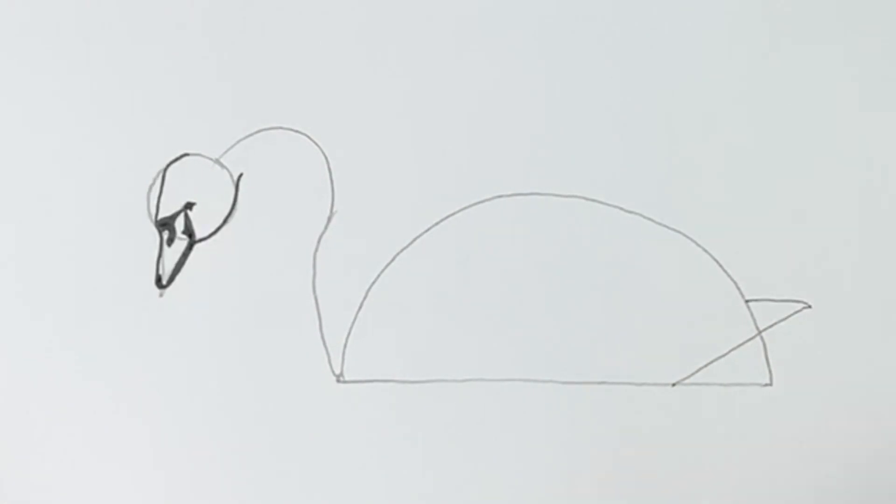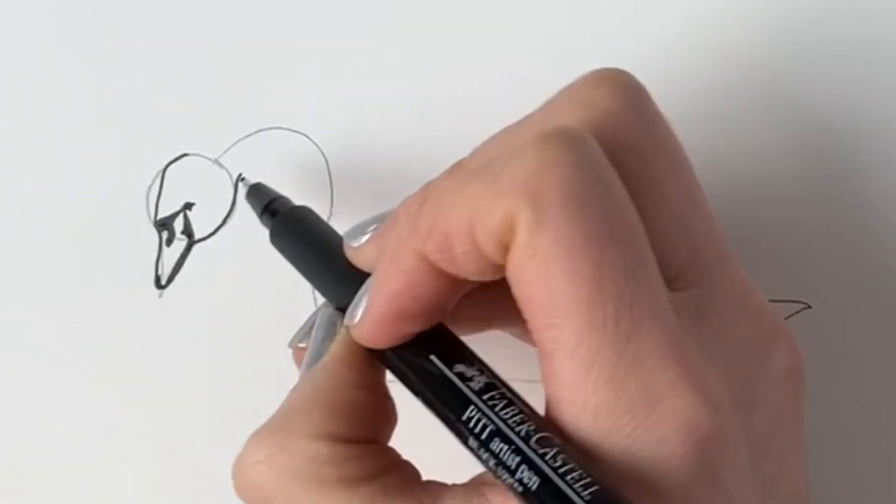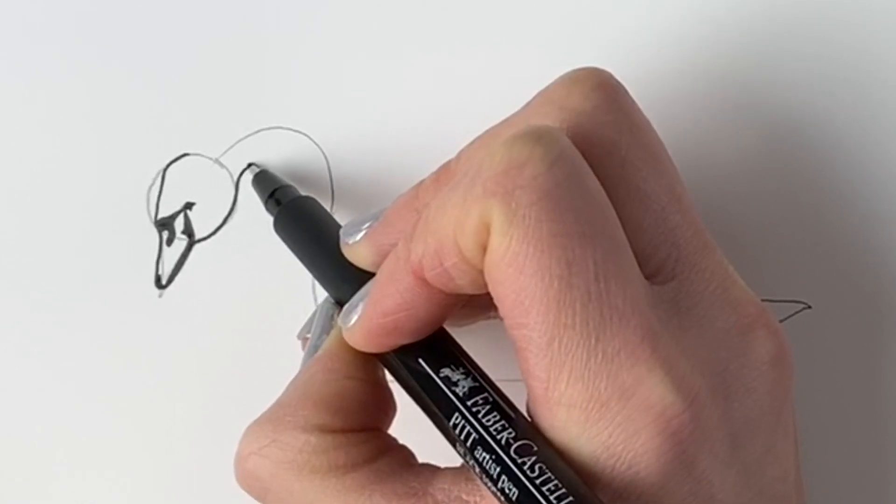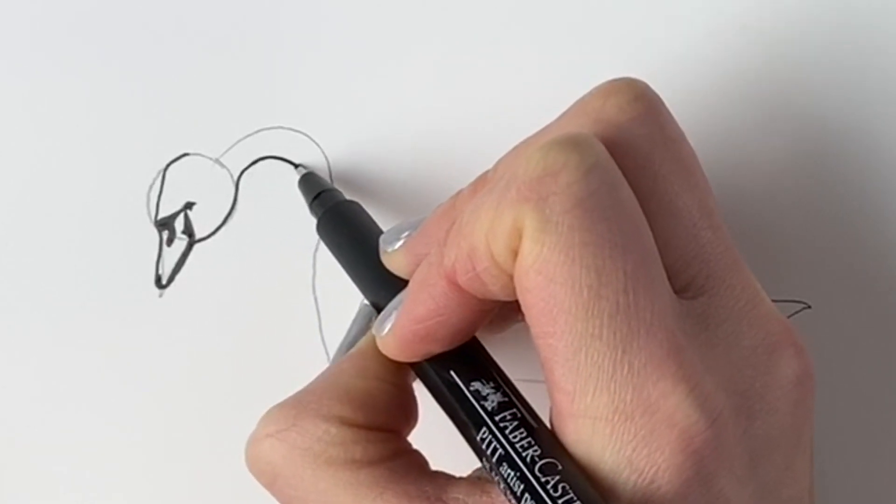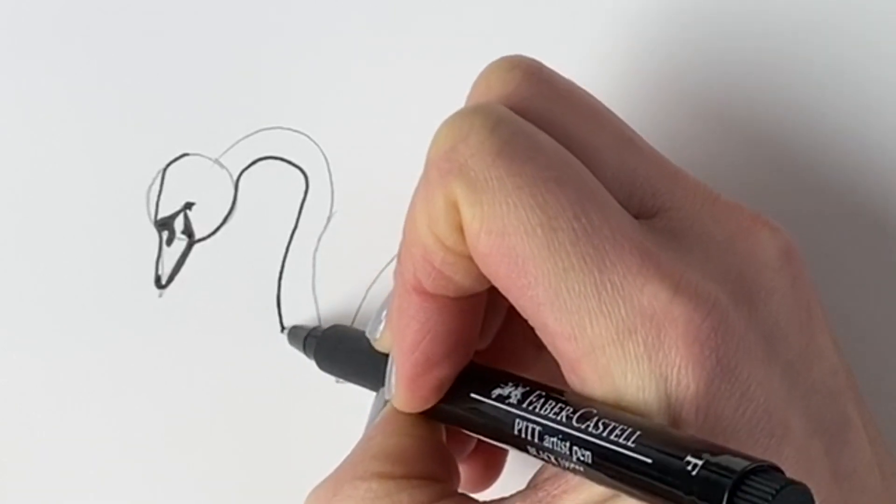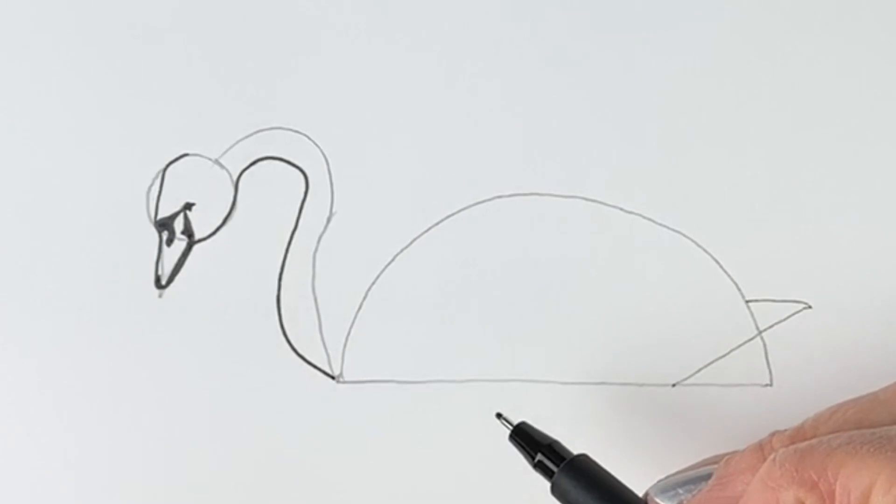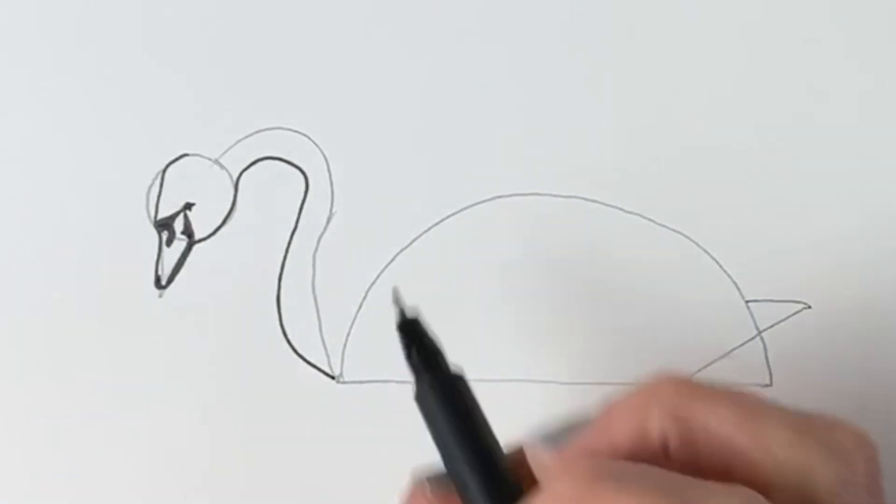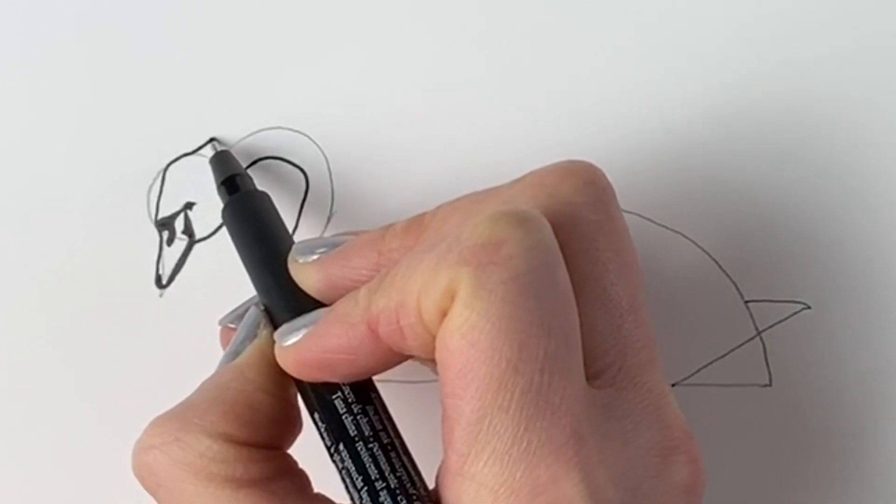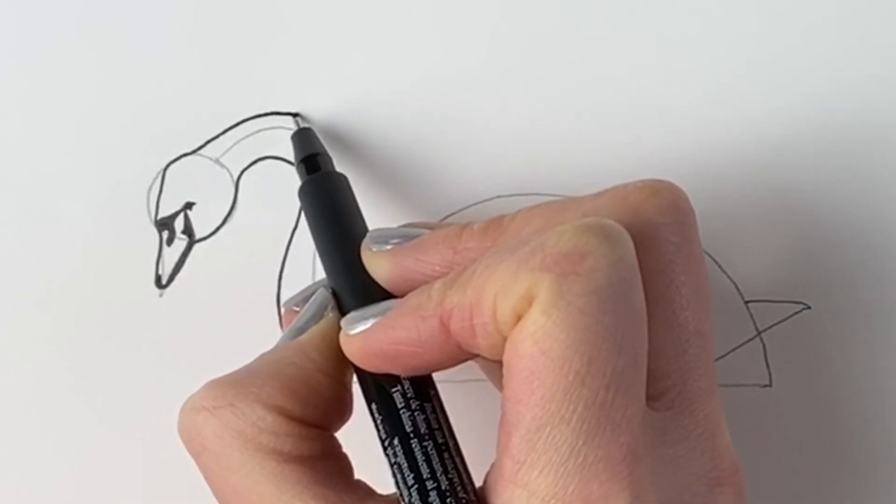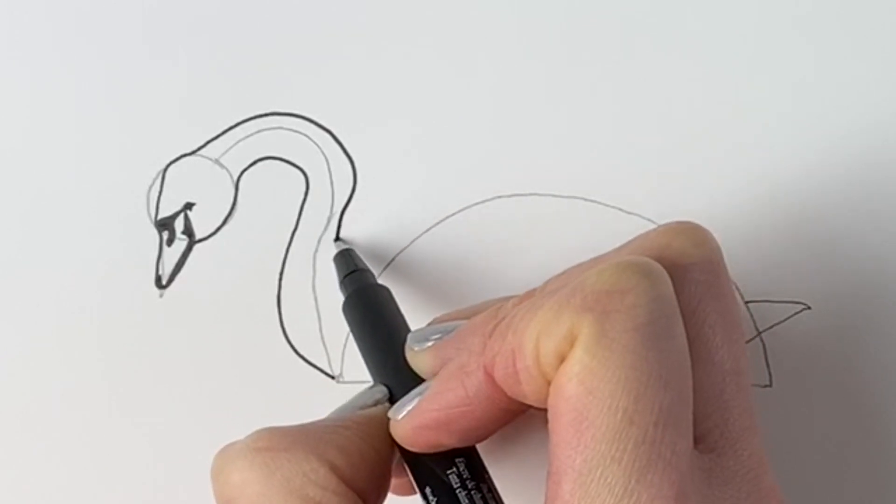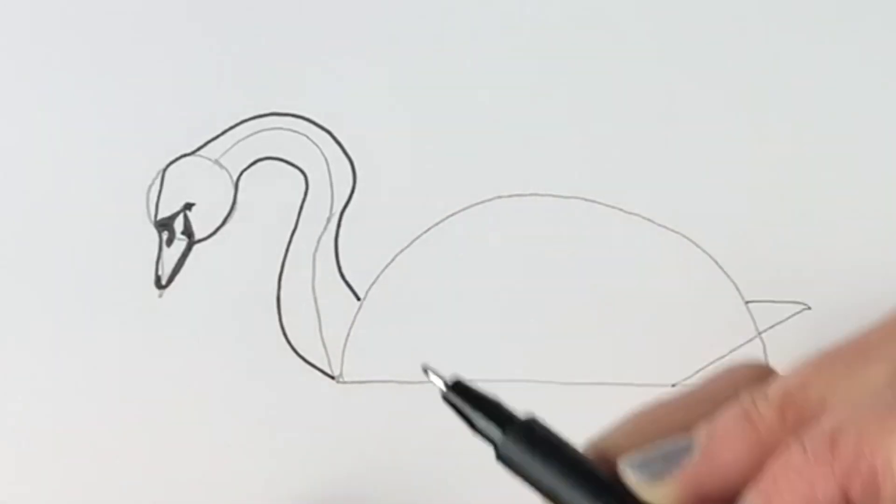Now we're going to carry on the neck. The neck is going to come all the way down, like this, round out, and then joins in with the preparatory line. The top of the head follows this line round, comes all the way around until it hits the body there.